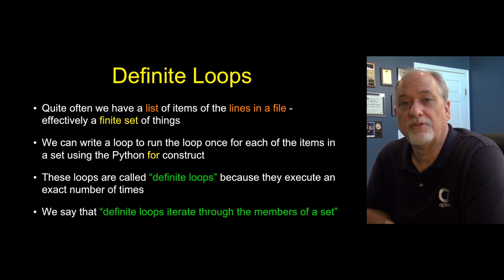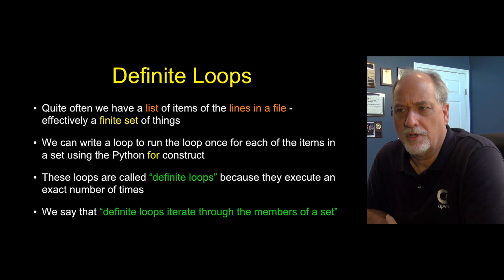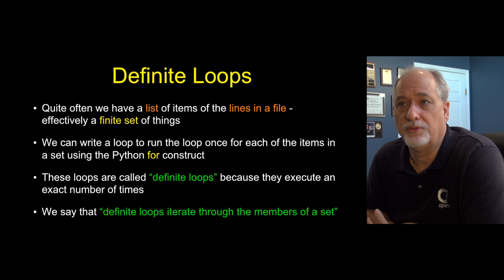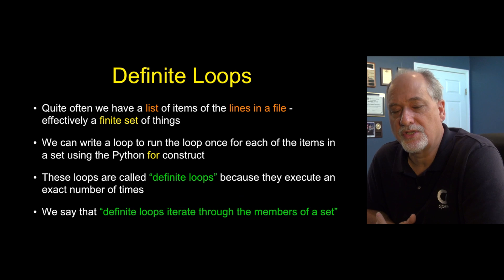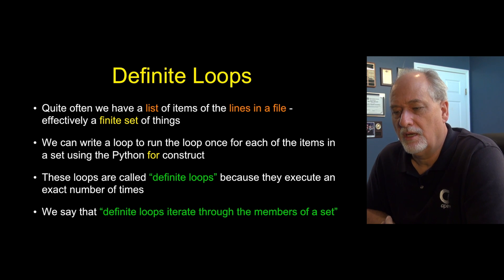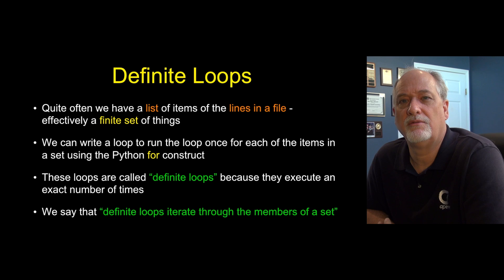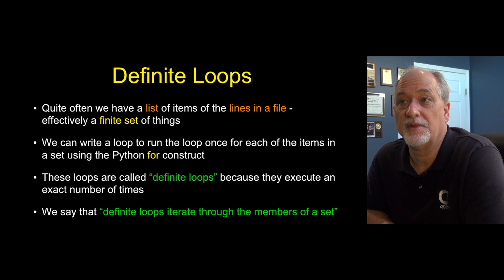Definite loops use the for keyword. The idea of a definite loop is it's going to loop through some set of things — it might be a set of lines in a file, a set of characters in a string, or a set of strings in a list of strings. Whatever it is, it's going to run a finite number of times, depending on the thing that it's looping through.